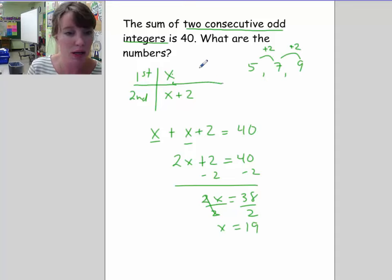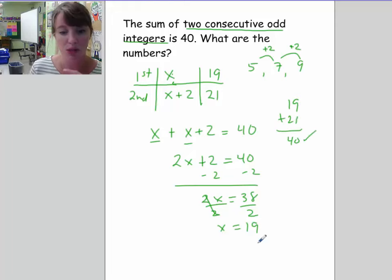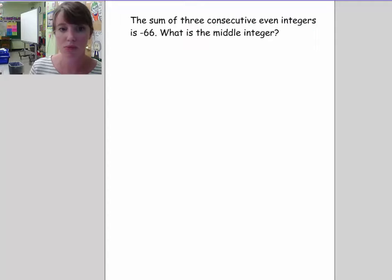So here, again, I'm not finished. 19. I've got to go put this back up in my chart. And 21. So let's just make sure the sum of 19 and 21 must be 40. And it is. So this is good. The consecutive integers that I'm looking for are 19 and 21.